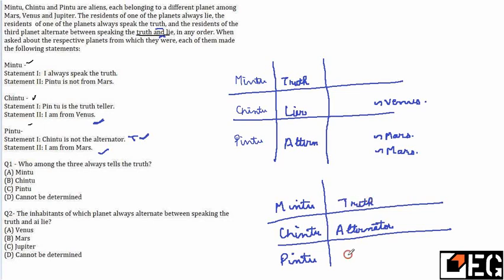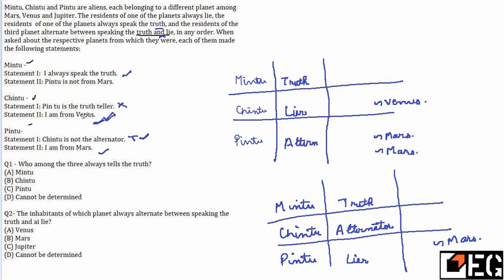So Mintu needs to be the truth-teller, and Pintu needs to be the liar. Check the statements given by Mintu — he says 'I always speak the truth,' which is true, and 'Pintu is not from Mars,' which is also true. Now Pintu is the liar; his first statement 'Pintu is a truth-teller' is false. His second statement needs to be true: 'I am from Venus' — so Pintu is from Venus.